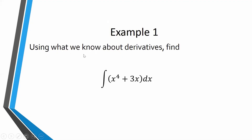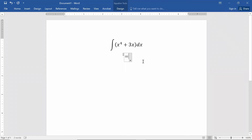Let's try this example: find the indefinite integral of x to the fourth plus 3x dx. From now on I'll say we find the integral of x to the fourth plus 3x with respect to x, because the dx differential indicates the variable we're integrating with respect to. Let's think through how we would come up with an antiderivative for x to the fourth plus 3x.